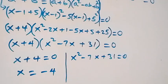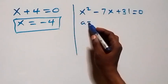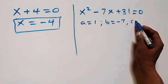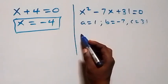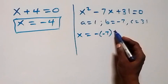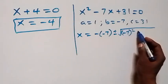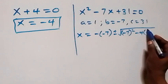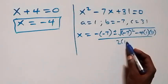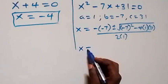Also, solving the quadratic equation using the quadratic formula: a equals 1, b equals minus 7, c equals 31. x equals minus b, which is minus minus 7, plus or minus square root of minus 7 squared minus 4 times 1 times 31, divided by 2 times 1.